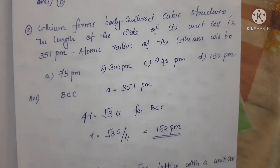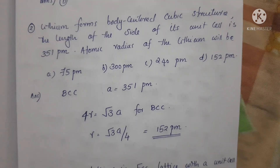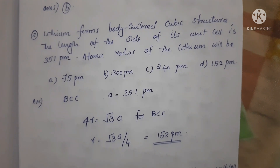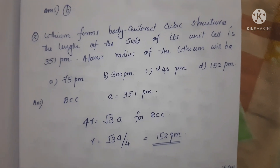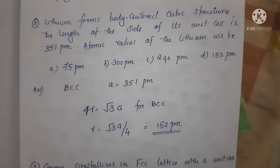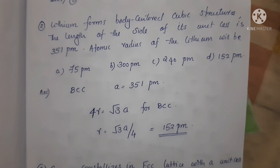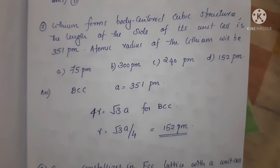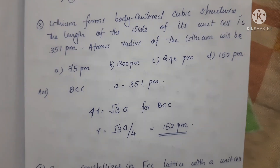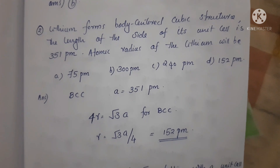We will calculate the radius. For a BCC unit cell, the formula is 4R = √3·A. Solving this, the radius comes out to 152 picometers. Option D is the correct answer.